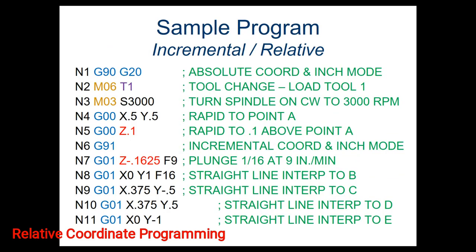Here's our sample program. We're going to go through line by line and do a quick talk about what's happening. Our very first line is just like we do with absolute coordinates — we're going to start off by putting in G90 and G20. G90 says we're doing absolute coordinates, and G20 says we're using inches as our units, not millimeters. And then line two, just like on our last code, we're going to do a tool change.